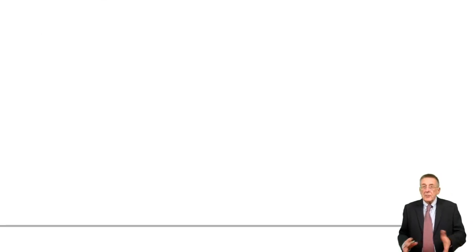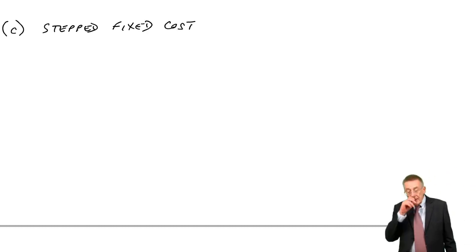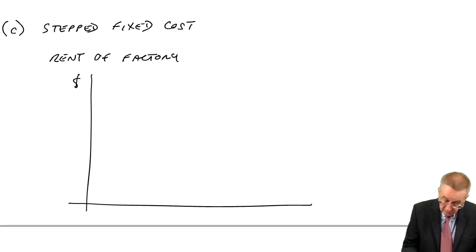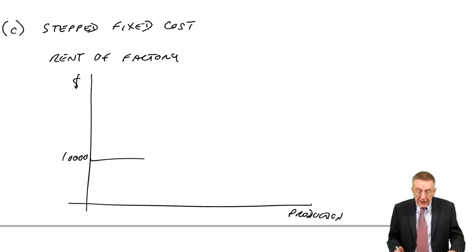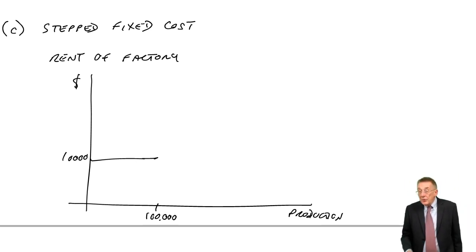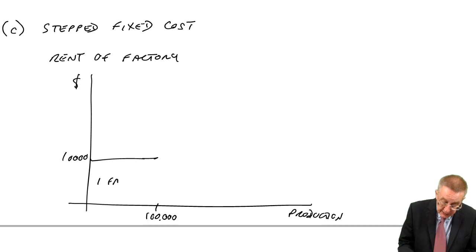The next two are variations. First of all, a stepped fixed cost. I've illustrated this immediately with my graph. Suppose we're looking at the rent of the factory. Maybe it's $10,000. But that factory is only capable of producing a maximum of 100,000 units.